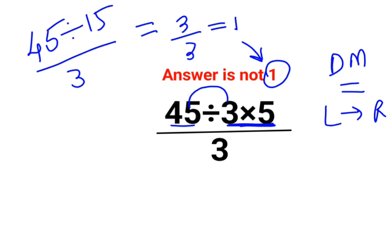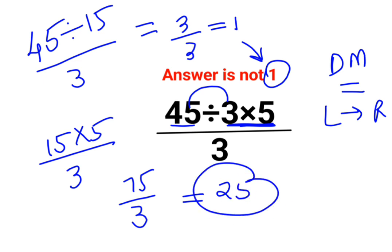So first you will do 45 divided by 3 which is 15, multiplied by 5 over 3. So this is coming out to be 75 upon 3. The answer for this question is supposed to be 25 and not 1.